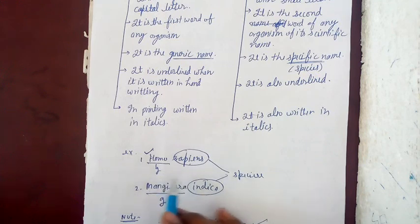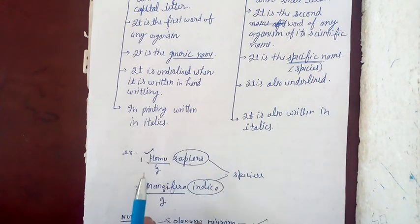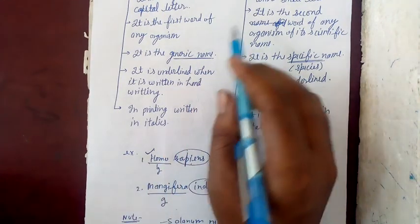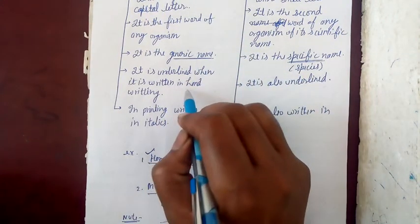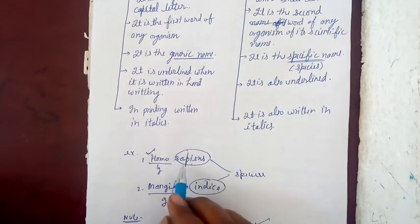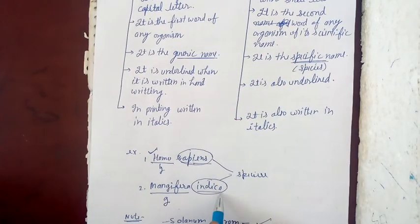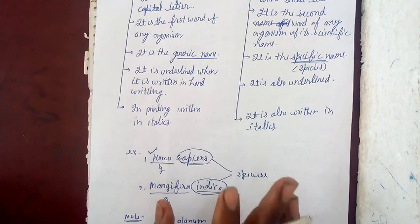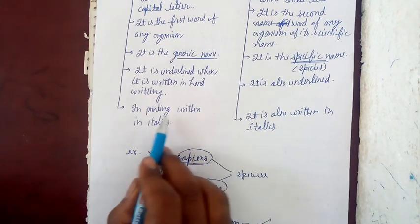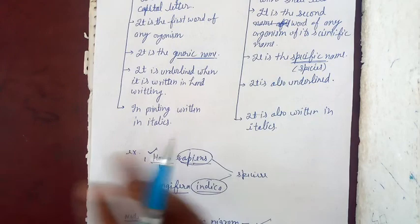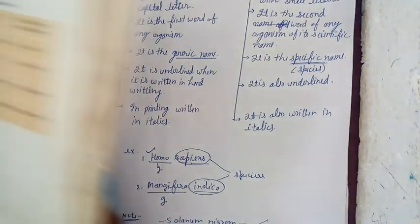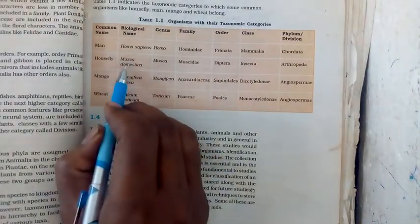The genus is always underlined when it is written in handwriting. In printing, it is written in italics.